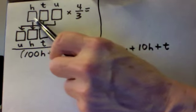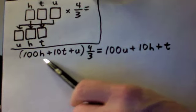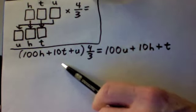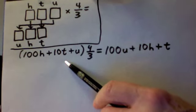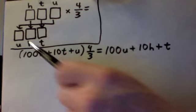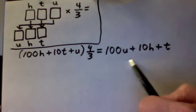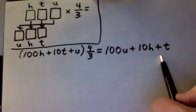The value of the original number is 100h plus 10t plus u. That value multiplied by four-thirds gives the value of the new number which is 100u plus 10h plus t.